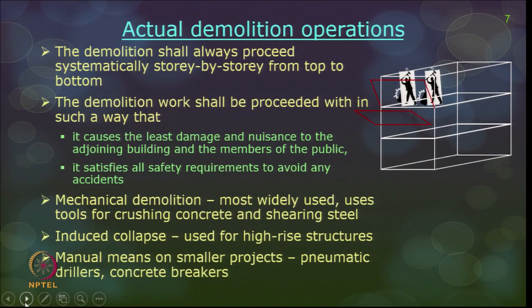There are 3 types of demolition: manual means, mechanical demolition, and induced collapse, each with very different characteristics. Manual means is very slow — using concrete breakers or pneumatic breakers and drills to break the structure — but is not too hazardous in terms of dust pollution. It is still applicable for smaller projects. Induced collapse is the opposite extreme: explosives and blasting bring the structure down almost instantly, but noise and dust pollution are very high.